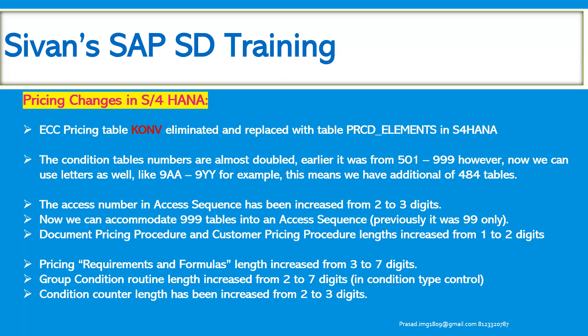The document pricing procedure and customer pricing procedure length has been increased from one to two digits — earlier it was only one digit. The pricing requirements and formulas length has been increased from three to seven digits; it was earlier only three digits, now increased to seven digits. The group condition routine length has been increased from two to seven digits in condition type control. Also, the condition counter length has been increased from two to three digits.